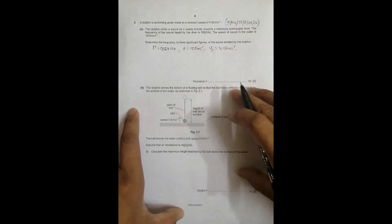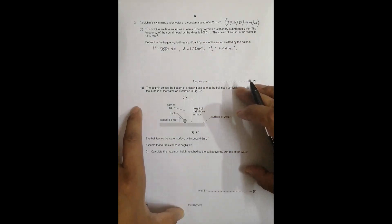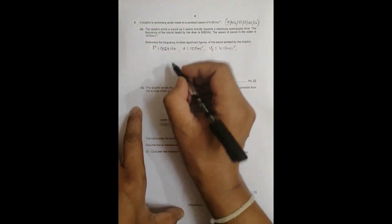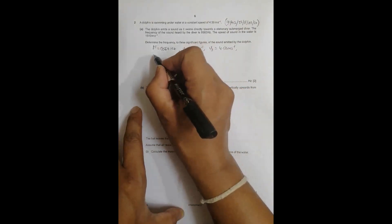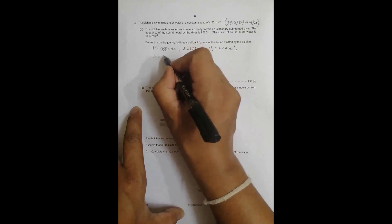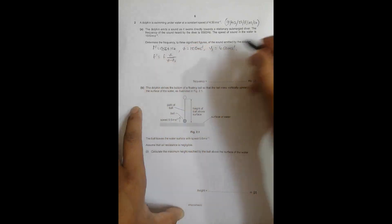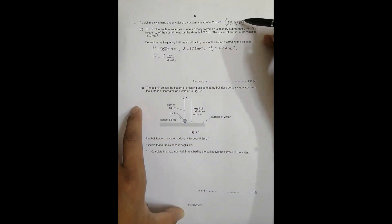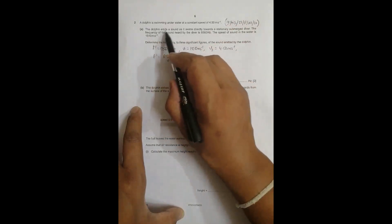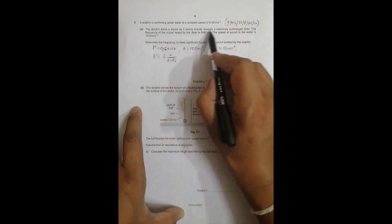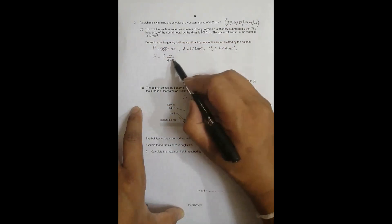We need to find the true frequency of the sound produced by the dolphin. The equation relating them is F prime equals F times V divided by (V minus Vs). Since the source is traveling towards the observer, the diver, this equation applies.